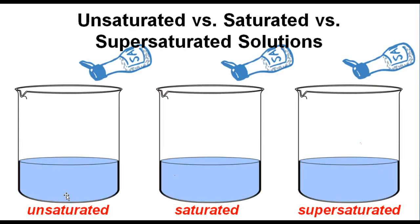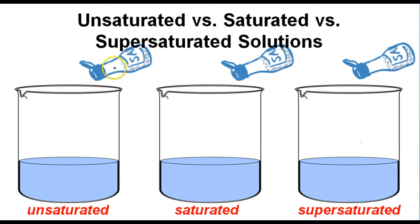When we talk about solutions, solutions can either be unsaturated, saturated, or supersaturated. We have three beakers here — the first is an unsaturated solution, the second will be a saturated solution, and the third will be a supersaturated solution. In an unsaturated solution, the solution has not quite reached its saturation point. If I shake out just a little bit of salt and stir it up, it hasn't reached the total amount of solute that can be dissolved in it — it is considered unsaturated. I can still continue to add more salt, stir it up, and the salt will dissolve with no problem. An unsaturated solution is one in which you can still add more solute and continue to dissolve it.